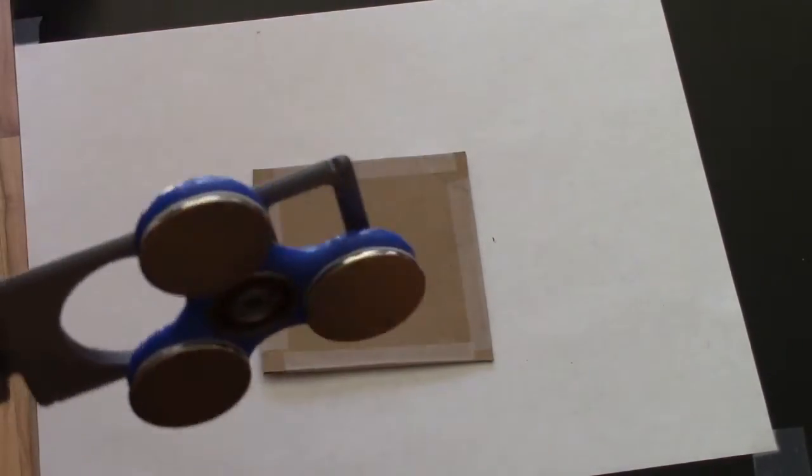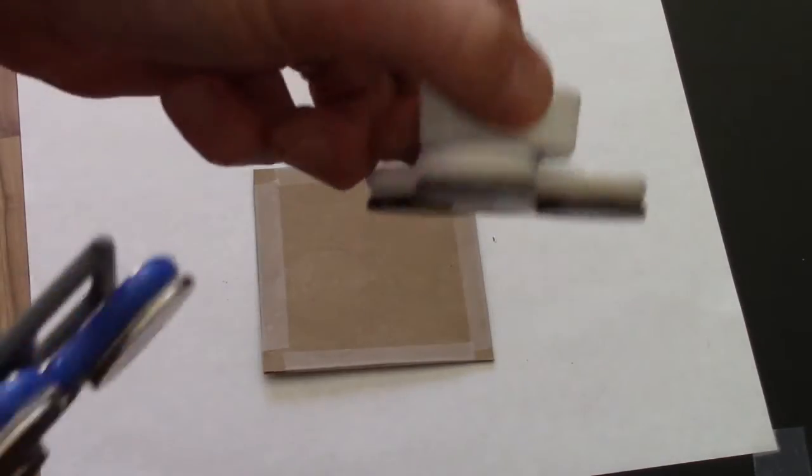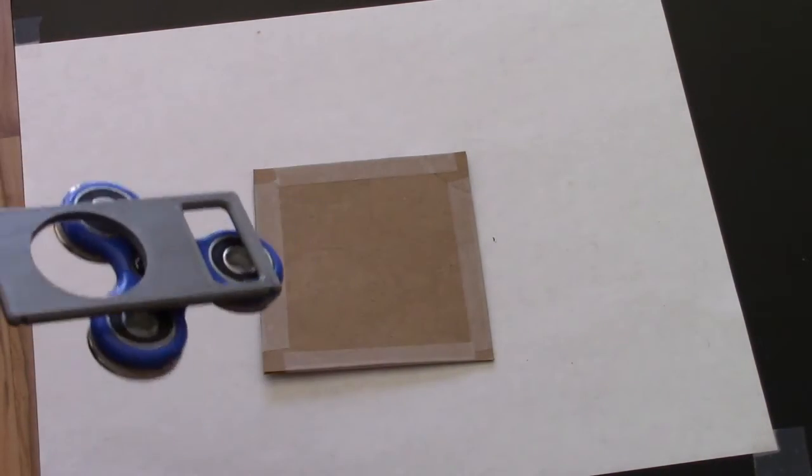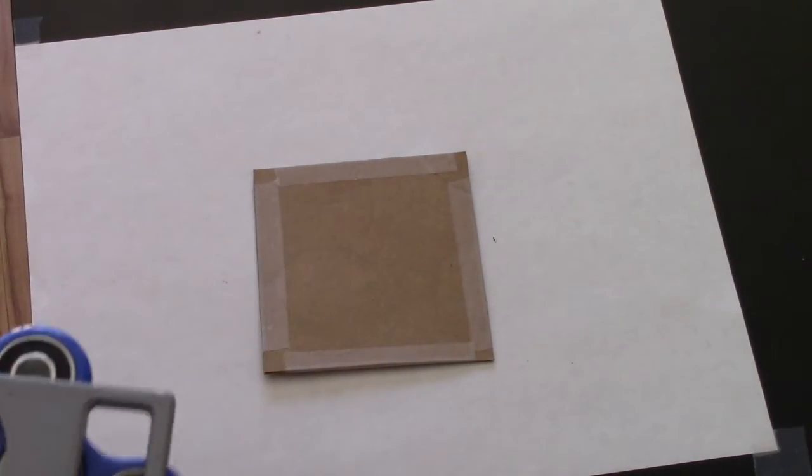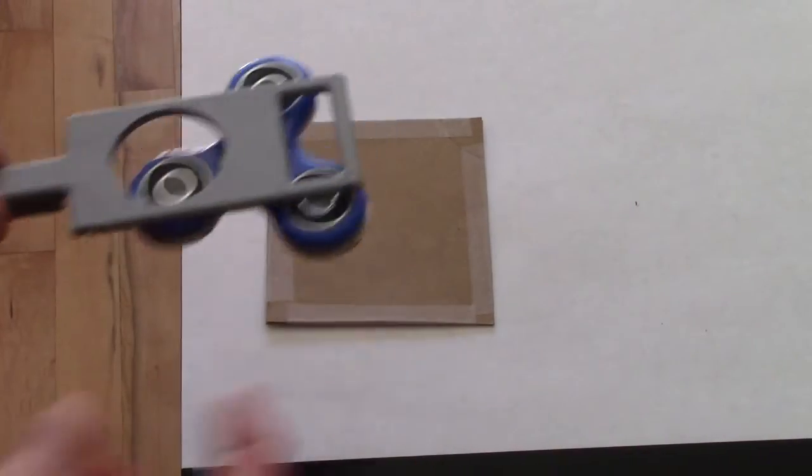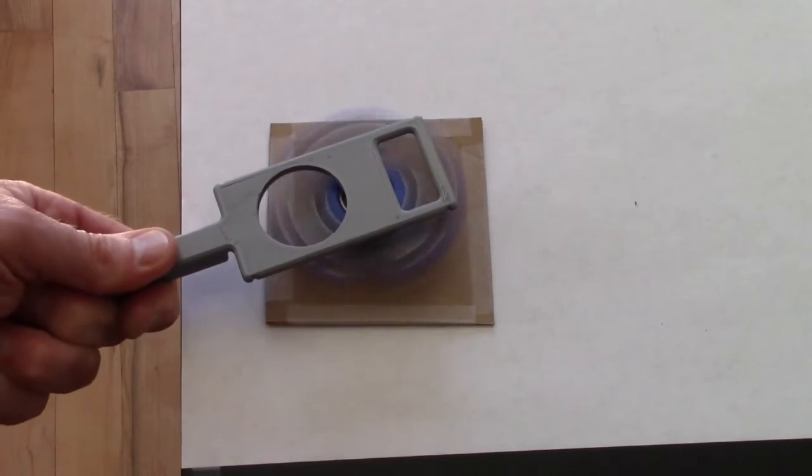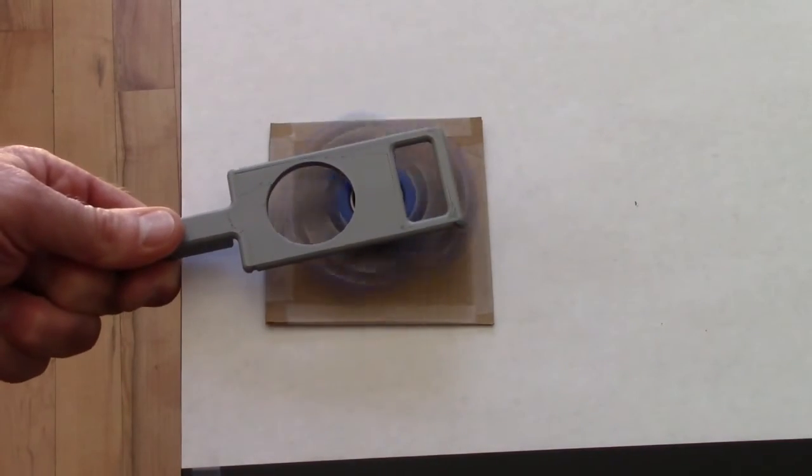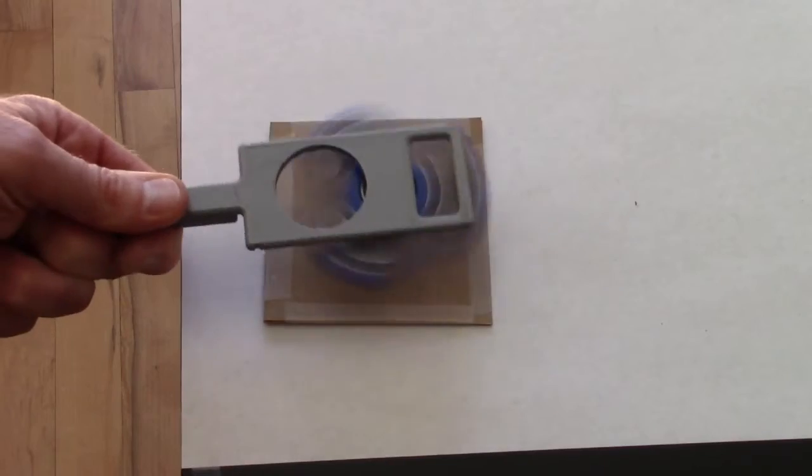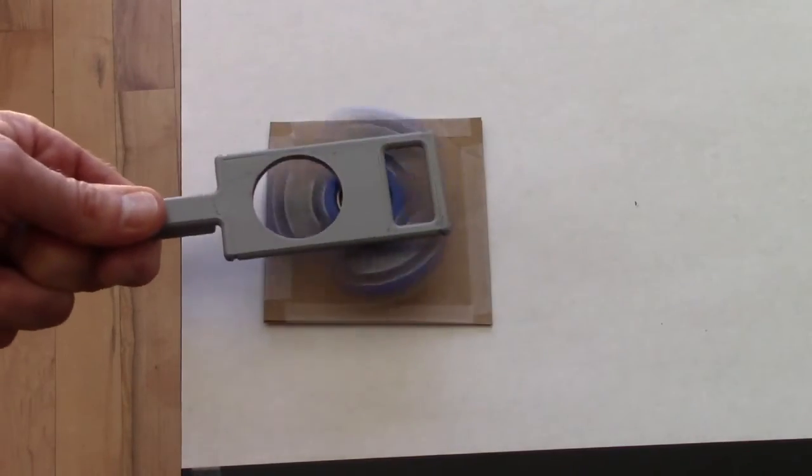Now that we have a handle for our fidget spinner, either the 3D printed handle or the bottle cap handle, we can go ahead with our experiment. We're going to repeat what we did before with cardboard, steel, and then copper. With the cardboard, I'm going to spin it and hold it far, hold it close, maybe move it around, get it really close. I don't notice anything, not too surprising.